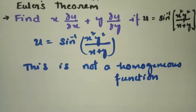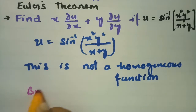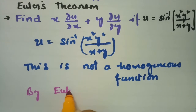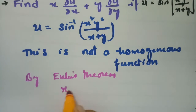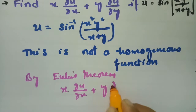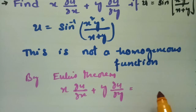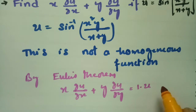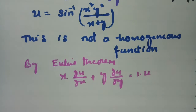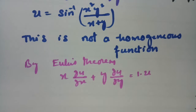Since it is not a homogeneous function, we cannot directly apply Euler's theorem to u. By Euler's theorem we have x·∂f/∂x + y·∂f/∂y = n·f, where n is the degree.